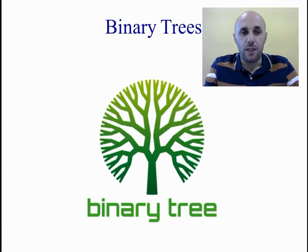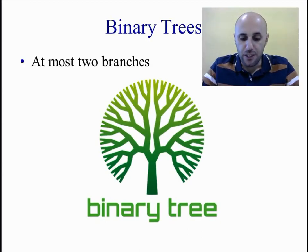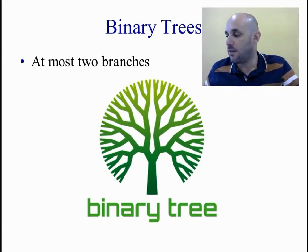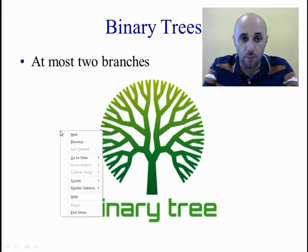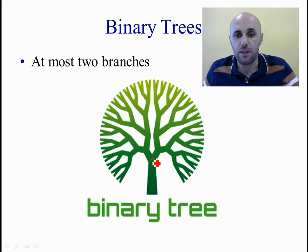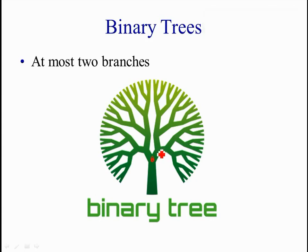A binary tree is a tree where each time a branching happens there are at most two branches. There can be either one, two, or no branches at all. The tree you can see here in the picture is a binary tree because here there is a point of branching, and here we have another point of branching with two branches left and right, again two branches, and so on up until here where we have zero branches.